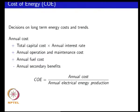One way of looking at cost of energy is you are purchasing some equipment, installing it and getting energy out of it, operating the equipment over a long time frame, maybe multiple years. You want to look at the cost on an annualized basis, for which you make use of things like interest rate, annual maintenance cost, annual fuel cost, and if there are secondary benefits you look at it as a negative cost on an annualized basis. Then you look at what is the energy produced on an annual basis and calculate the cost of energy.